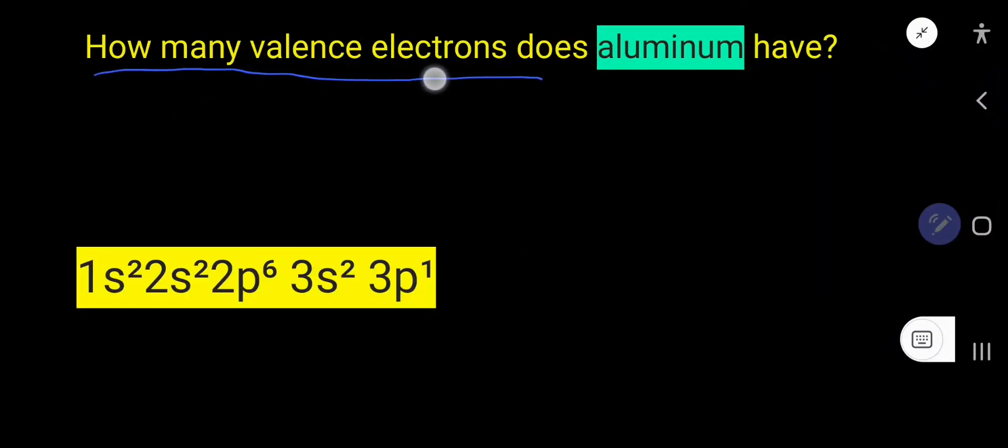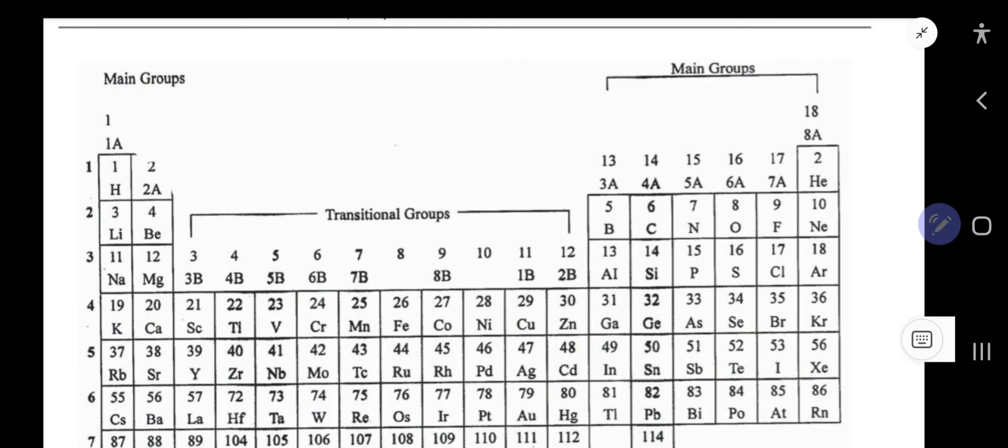How many valence electrons does aluminum have? Okay, the answer is three. That is, aluminum has three valence electrons. Let me show you two ways to find out the valence electrons for aluminum. So here is the first way.